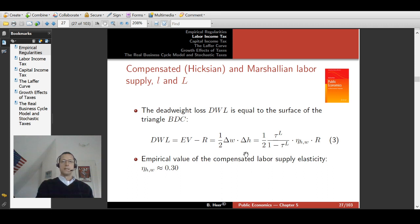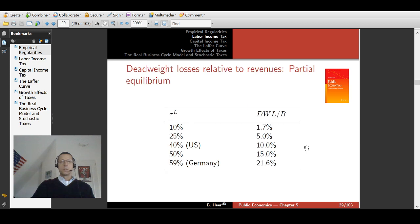Now if we substitute the compensated labor supply elasticity, which is defined as the percentage change of the Hicksian labor supply in response to a one percent change in the wage rate, we derive the expression in equation three for the deadweight loss, the excess burden. And if we calculate it relative to tax revenue R, we find it to be the expression one over two tau L over one minus tau L times the compensated labor supply elasticity E^h_w.